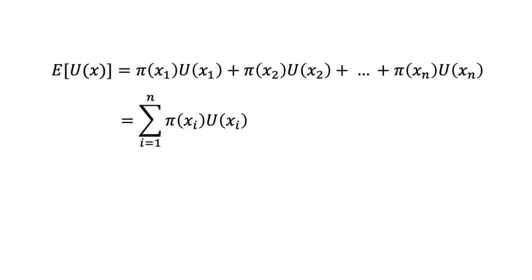First, define utility u(xi) over final outcomes x1 through to xn. Second, define subjective probability π(xi) over final outcomes x1 through to xn.